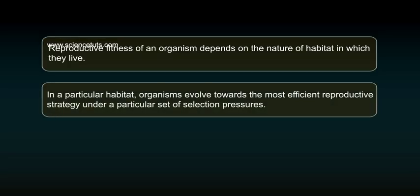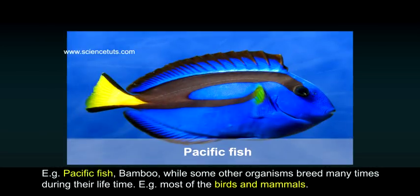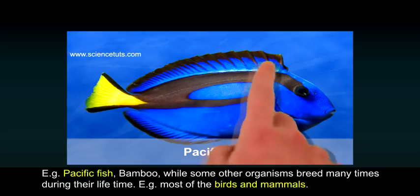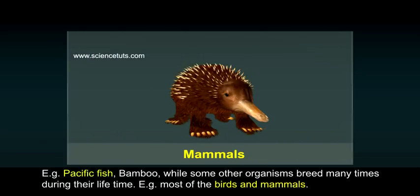In a particular habitat, organisms evolve towards the most efficient reproductive strategy under a particular set of selection pressures. According to the reproductive strategy of the organism, some organisms breed only once in their lifetime — for example, Pacific salmon and bamboo — while some other organisms breed many times during their lifetime, for example, most birds and mammals.